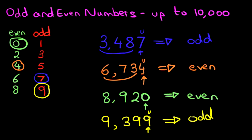So, once you know the odd and even numbers between 0 and 9, you can work out the odd and even numbers of any number. It really is that simple.